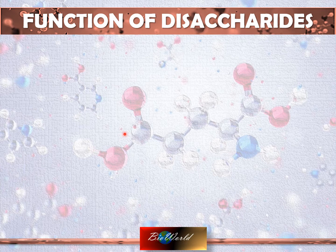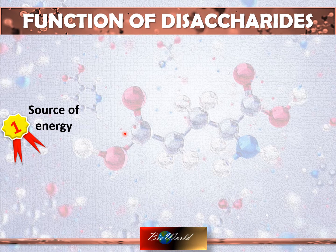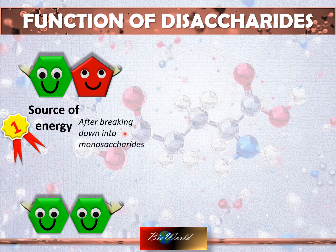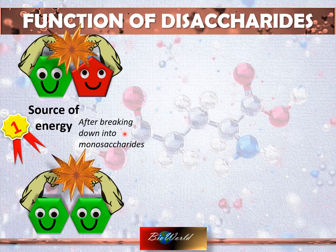Disaccharides have two major functions. The first function is similar to monosaccharides in that it is a rich source of energy. However, it is not able to generate energy as quickly as monosaccharides because disaccharides have to be broken down by enzymes into monosaccharides. But when the carbon-carbon bonds break, a lot of energy is generated.